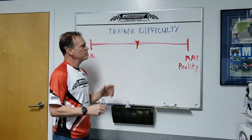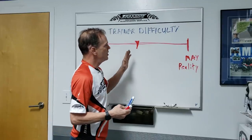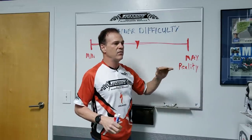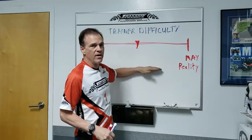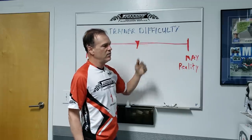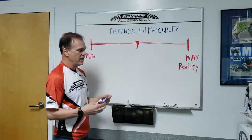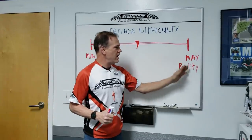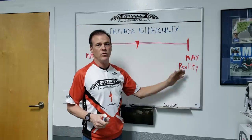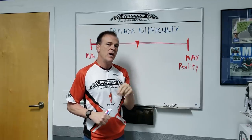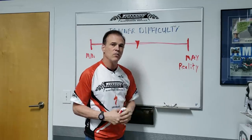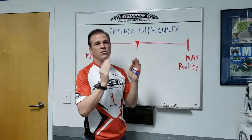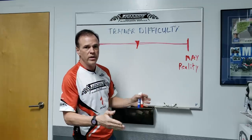Where this comes into play is ascending. It's not really detectable on flat ground, but on climbs is where this factor comes into play. When I say reality, that's going to put the actual grade and it's going to make your bike act exactly like it would if it was on real pavement, on real ground, climbing a real grade on any real day.